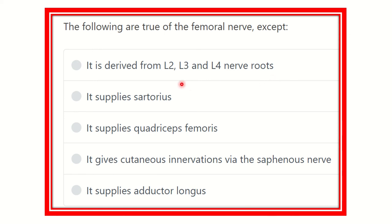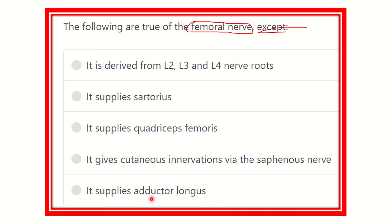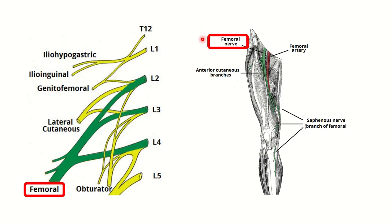Welcome to another question and answer session. The question is: 'The following are true of the femoral nerve, except?' The options are: it is derived from lumbar 2, lumbar 3, and lumbar 4 nerve roots; it supplies sartorius; it supplies quadriceps femoris; it gives cutaneous innervation via the saphenous nerve; and it supplies the adductor longus. We have to find which option is not true regarding the femoral nerve.